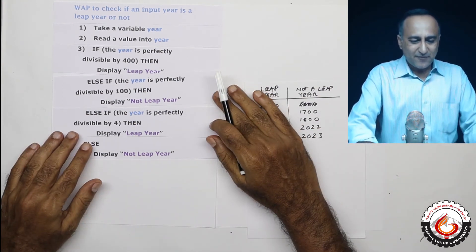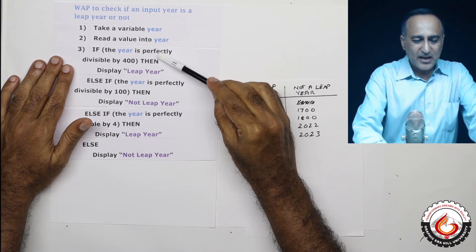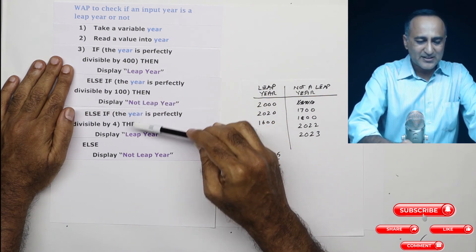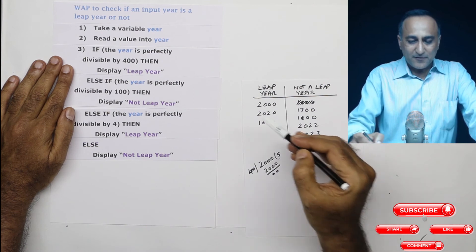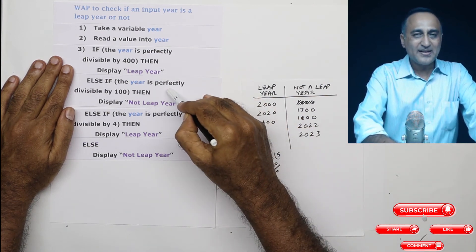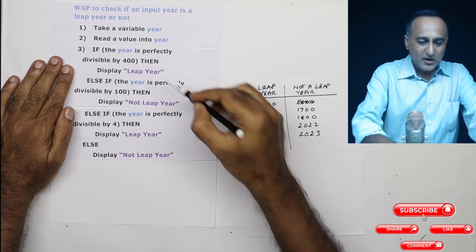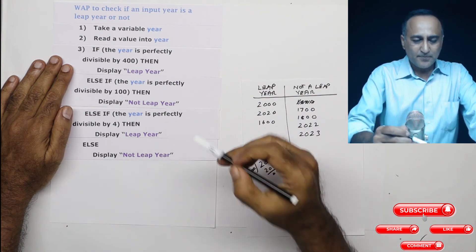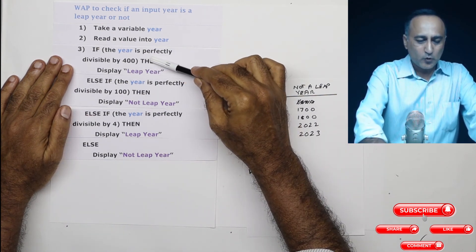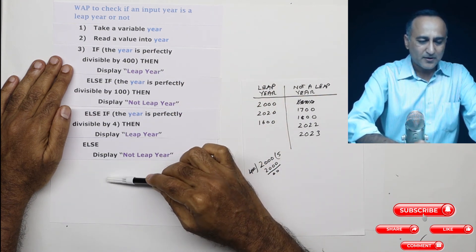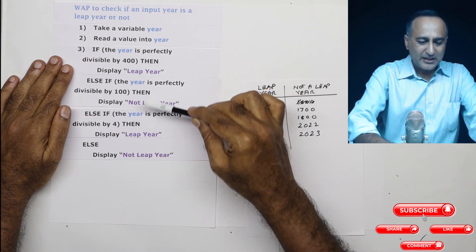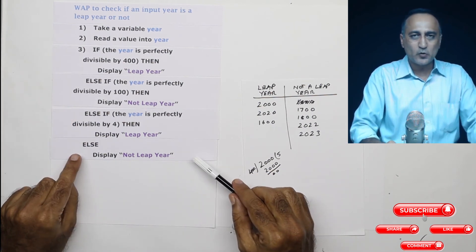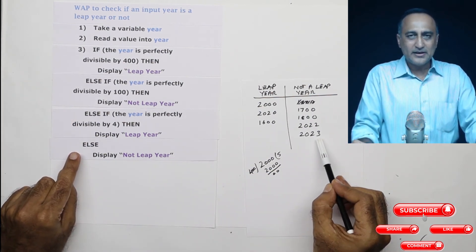The concept of this if-else structure is: if the first condition is true — as with the year 2000 — I print 'leap year' and skip the remaining else-if and else branches. If the first condition is false, I move to the next condition. If none of the conditions are true, the else executes and it shows 'not a leap year'.